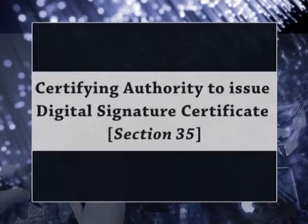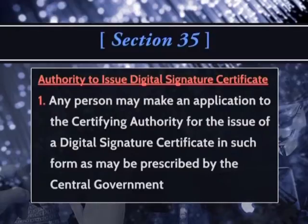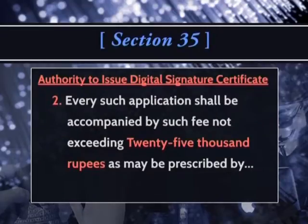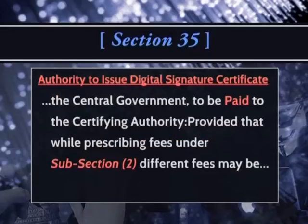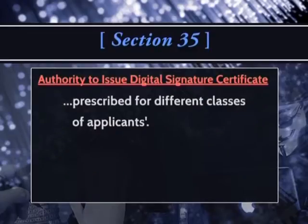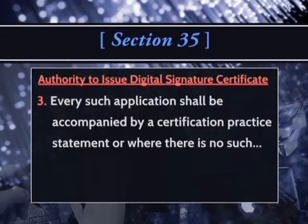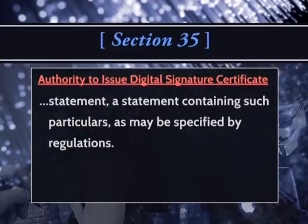Certifying authority to issue a digital signature certificate is defined in Section 35 of the IT Act. Any person may make an application to the certifying authority for the issue of a digital signature certificate in such form as may be prescribed by the central government. Every such application shall be accompanied by a fee not exceeding 25,000 rupees as may be prescribed by the central government, to be paid to the certifying authority. Different fees may be prescribed for different classes of applicants. Every such application shall also be accompanied by a certification practice statement or a statement containing such particulars as may be specified by the regulations.